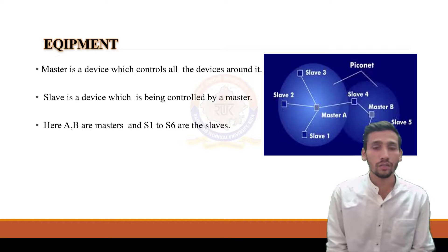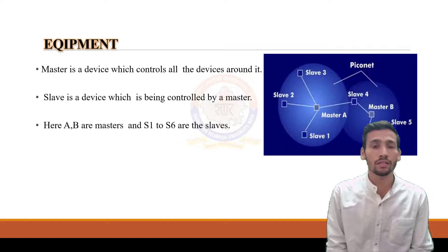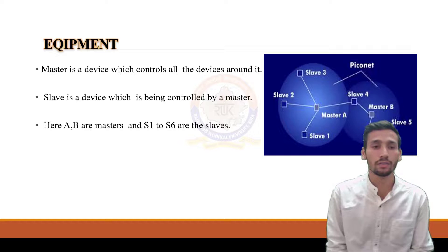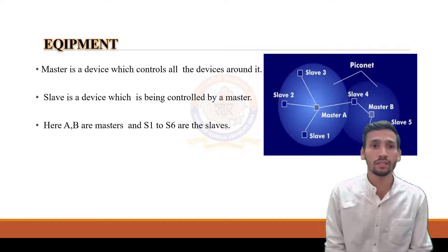The next slide covers equipment. A Piconet is the equipment used. The master is a device which controls all other devices around it, while a slave is a device which is controlled by the master. In the given figure, you can see one master and S1 to S6 as slaves, all connected with each other.